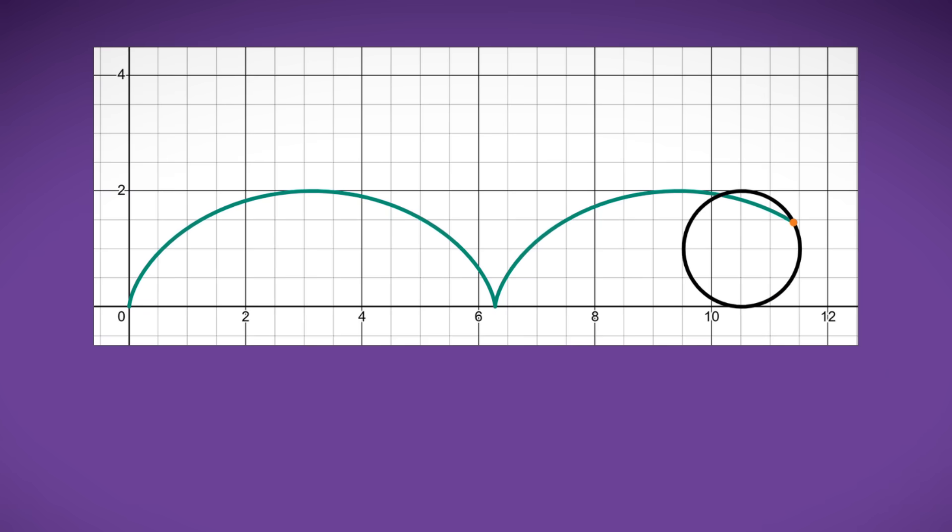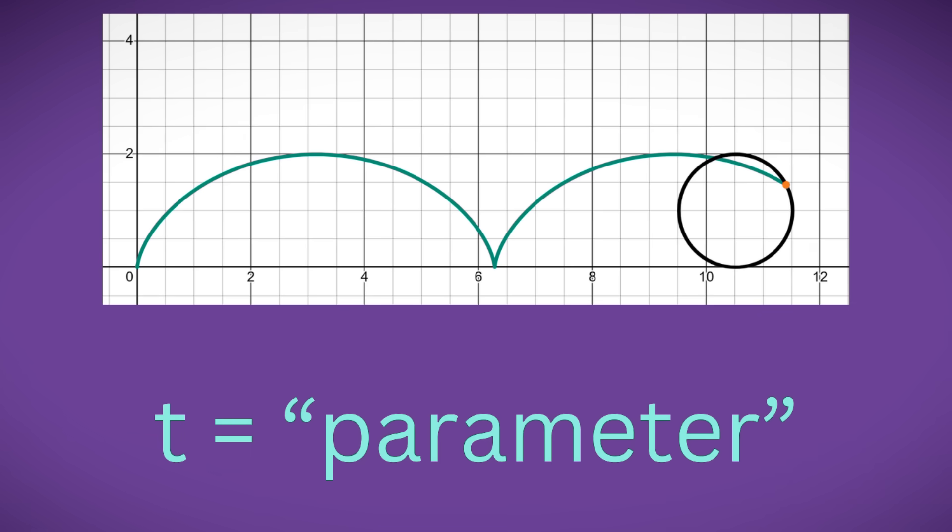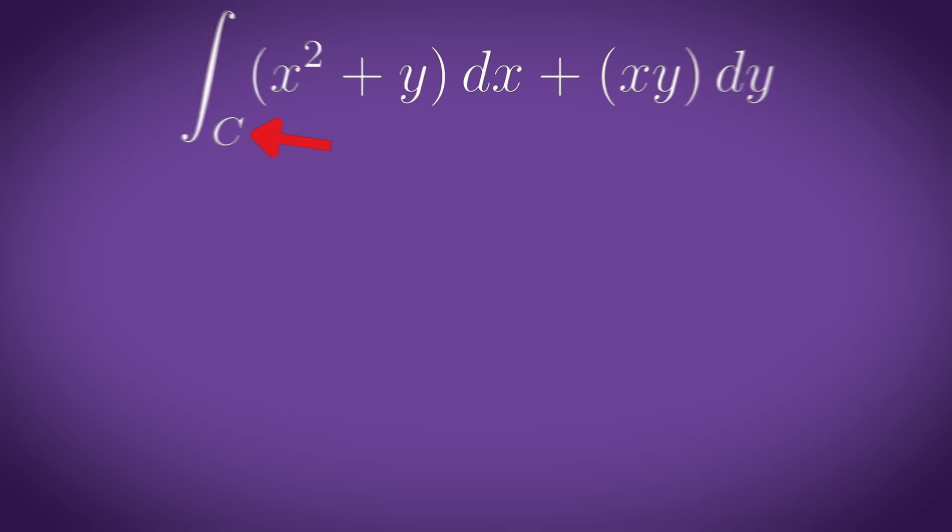6. Line integral. This is used to find the area under parametric curves which are curves defined using a third variable or parameter. C is a parametric curve.